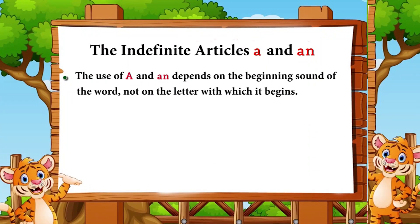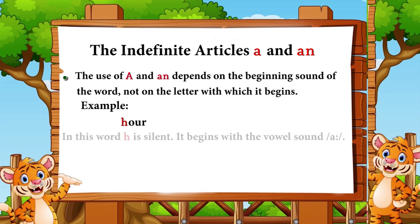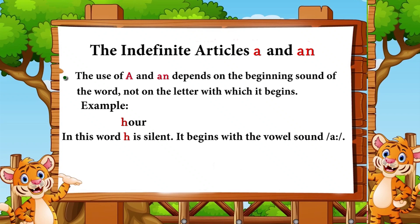The use of 'a' or 'an' depends on the beginning sound of the word, not on the letter with which it begins. Example: 'hour' — here 'h' is silent. In fact 'h' is a consonant, but it is silent and pronounced as 'our.' So we use 'an' before it. It begins with the vowel sound 'a,' so we use 'an hour.'